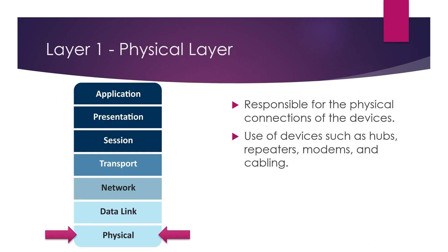Layer one is the Physical layer, responsible for the physical connection of devices. Devices at this layer include hubs, repeaters, modems, and cabling. Everything done to the data from layer seven down to layer one is now converted to ones and zeros and placed onto a transmission medium.